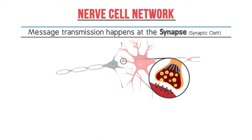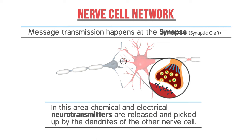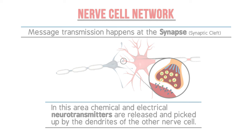This is the special area where chemical and electrical neurotransmitters are released and are picked up by the dendrites of the recipient nerve cell. As neurons pass information to the central nervous system, our body then interprets these messages as sights, sounds, aromas, and other sensations that allow us to observe the world around us. This concludes our discussion of the neuron. Thank you for watching.